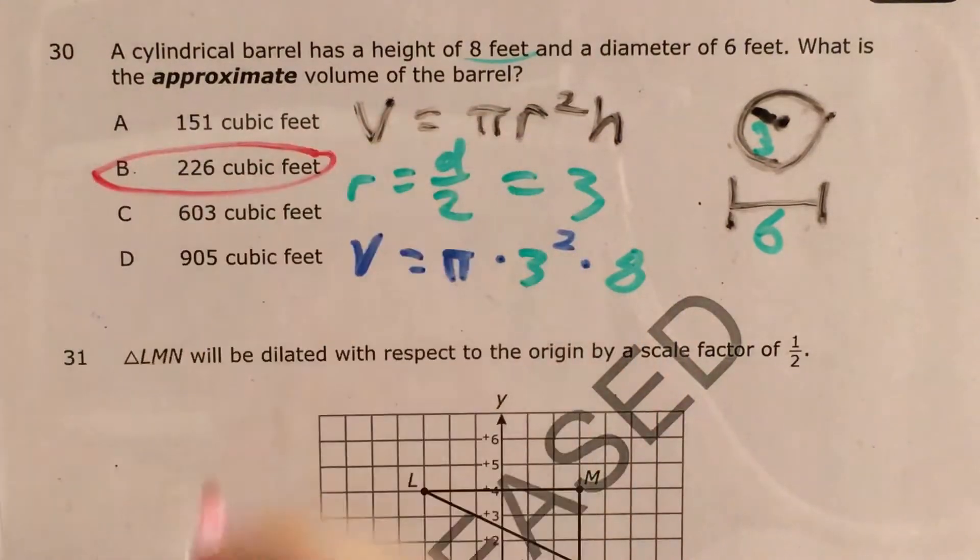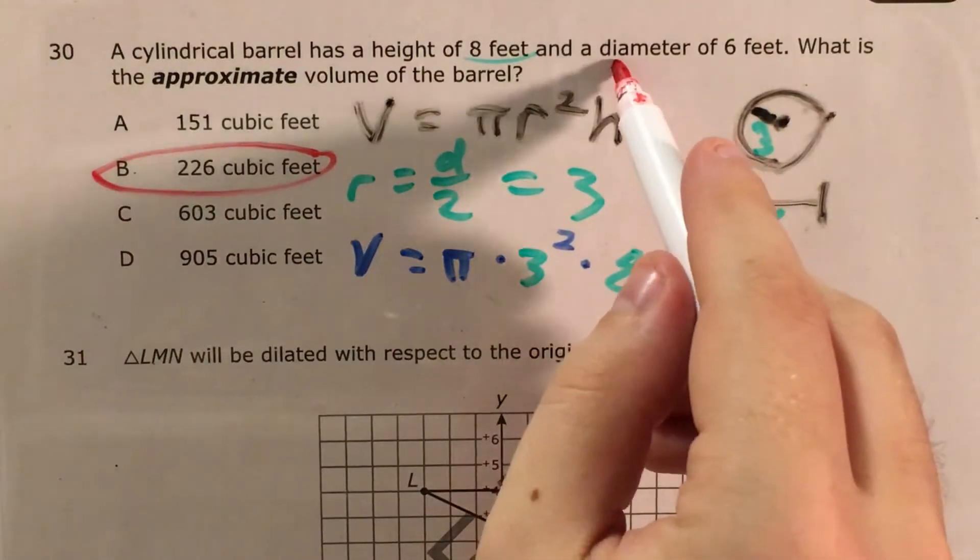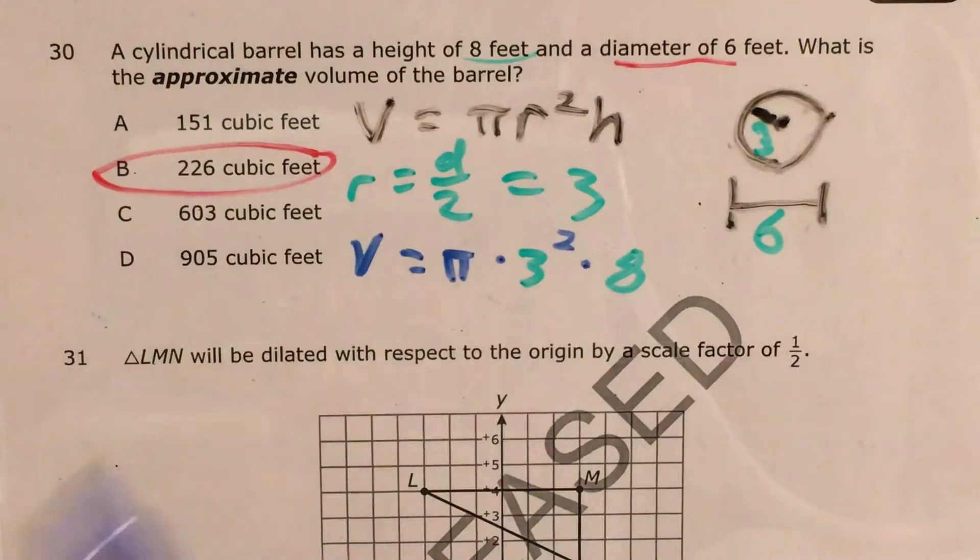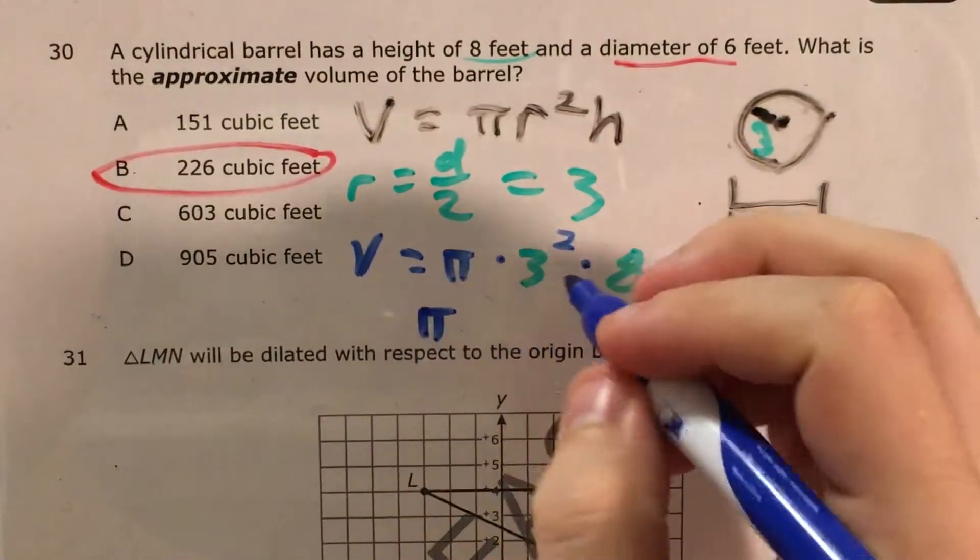So I'll circle that, but I do want to talk about the trick answer because the problem gave us the diameter. What if I just forgot to divide my diameter by 2?